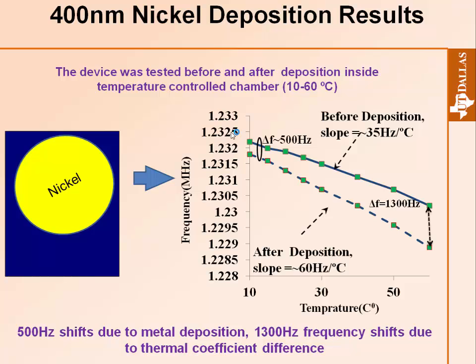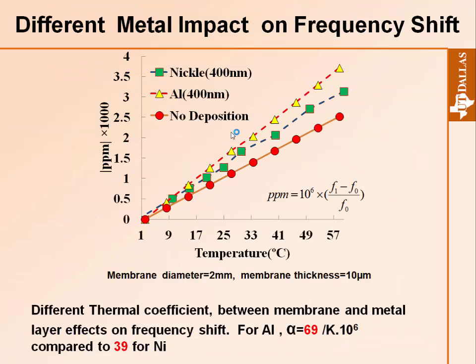This means that every material with a bigger thermal expansion coefficient will produce a larger frequency shift. That is why we also deposited an aluminum layer of the same 400 nm thickness — because aluminum has a bigger thermal expansion coefficient, the frequency shift for aluminum is larger than for nickel.